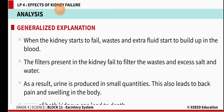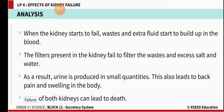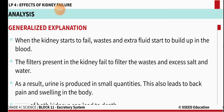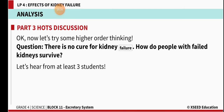When the kidney starts to fail, waste and extra fluid start to build up in the blood. The filters in the kidney fail to remove waste, excess salts, and water, so urine is produced in small quantities. This also leads to back pain and swelling in the body. Failure of both kidneys can lead to death, but if only one kidney is damaged, the person can lead life normally. There is no cure for kidney failure.